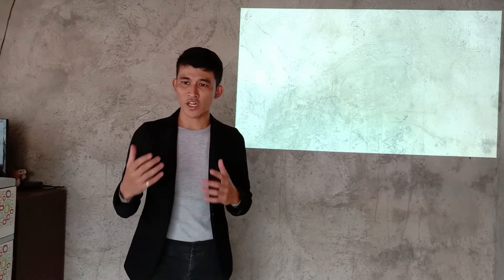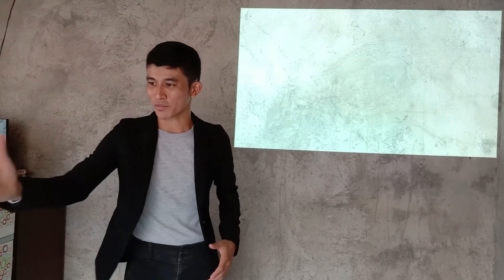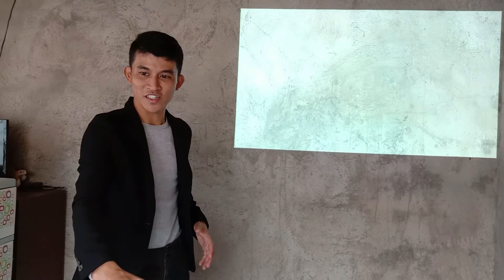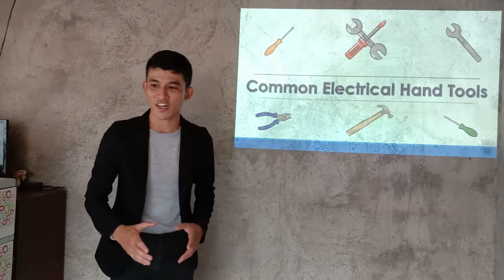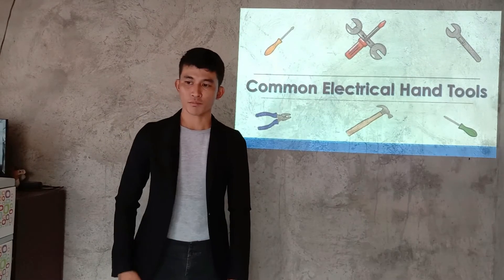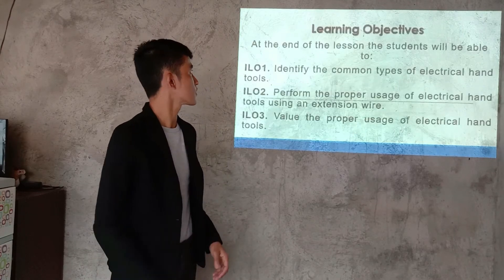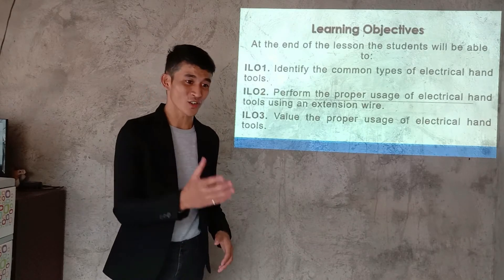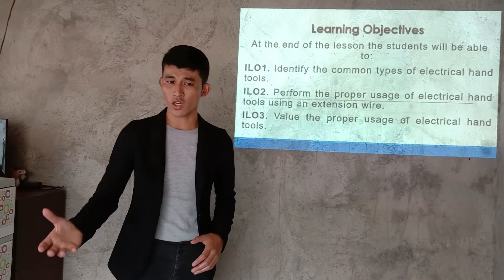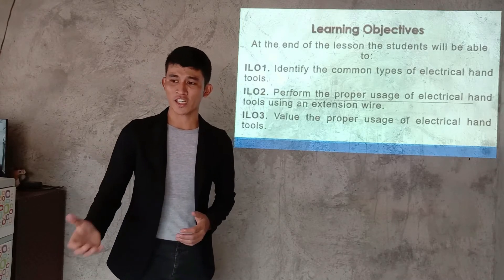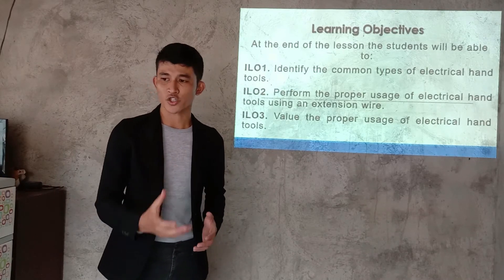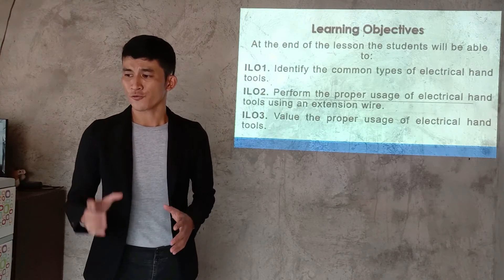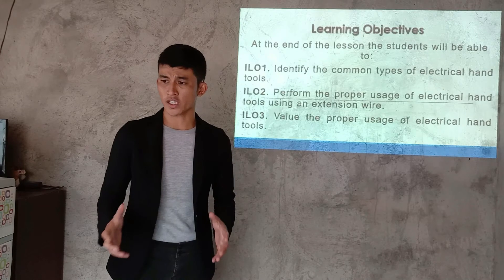Based on the activity that we did earlier, what could be the topic we are going to discuss today? Anyone? Yes, Monday. Very good. Our topic for today is all about the common electrical hand tools. Here are our learning objectives: at the end of the lesson, the student will be able to: number one, identify the common types of electrical hand tools; number two, perform the proper usage of electrical hand tools using extension wires; number three, value the proper usage of electrical hand tools.